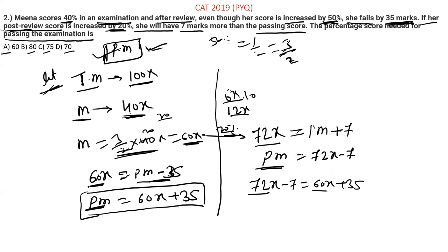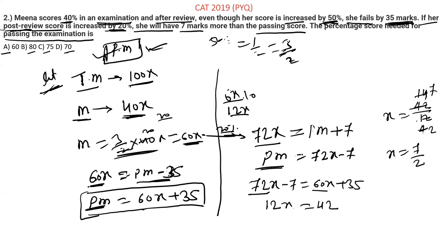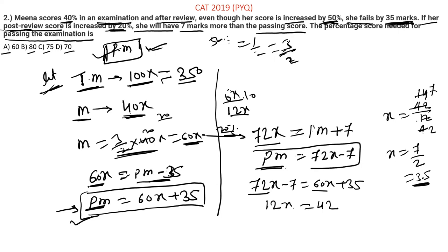Solving: 12x equals 42, so x equals 42 by 12, which simplifies to 7 by 2 or 3.5. We got the value of x. Total marks is 100 × 3.5 equals 350. Now put the value of x to find passing marks — either equation works. So passing marks equals 60x plus 35, which is 60 × 3.5 plus 35.